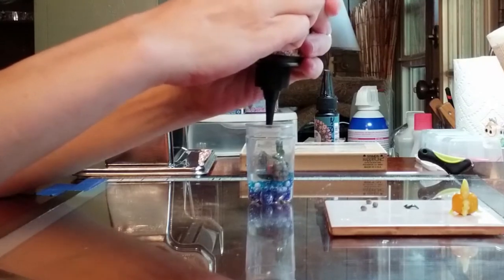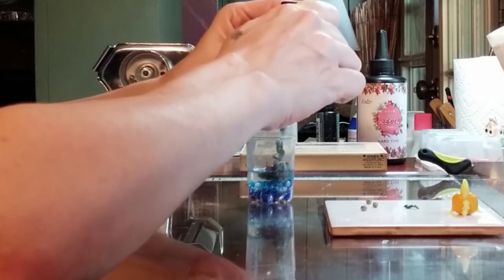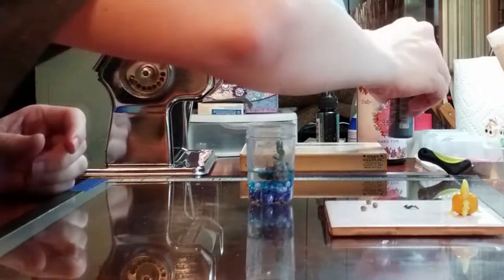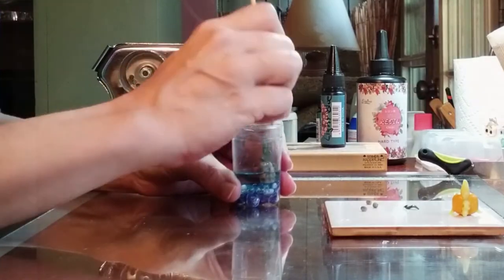And then I added a light blue resin in drops and used the skewer to swirl it into the clear to kind of make it look like water lines, and again cured it with the flashlight torch, whatever it's called.